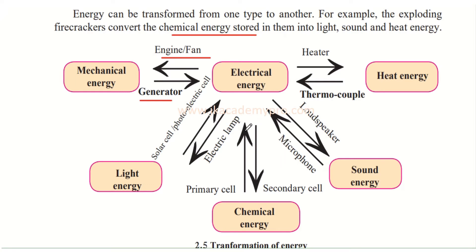An electrical lamp converts electrical energy to light energy — when you switch on bulbs in the house, electrical energy is converted into light energy. A solar cell or photoelectrical cell absorbs light energy delivered by the sun and converts it into electrical energy, which is used to supply energy in homes. A primary cell battery converts chemical energy to electrical energy, whereas a secondary cell converts electrical energy to chemical energy.